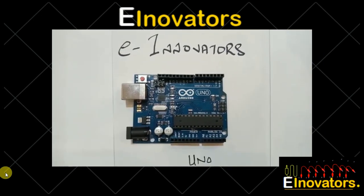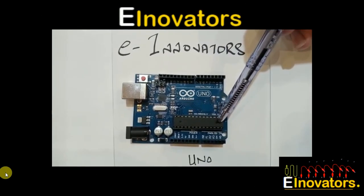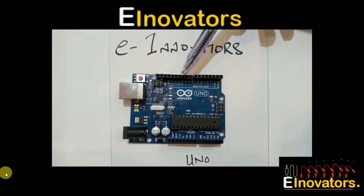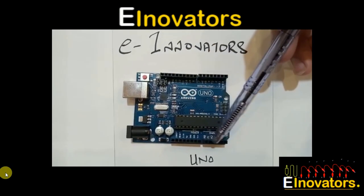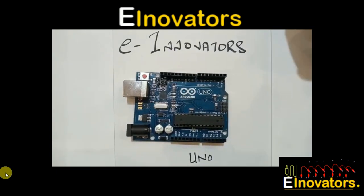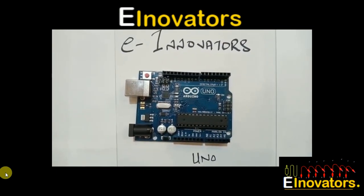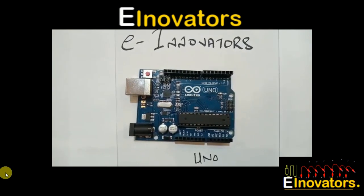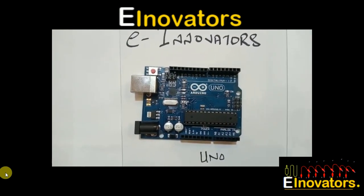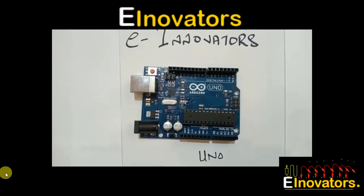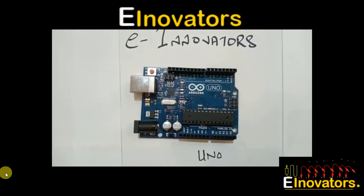This is the main IC, ATmega328P. There are 14 digital pins from 0 to 13 and 6 analog pins from A0 to A5. The difference between them is that analog input can take any number of values, unlike digital which can only take 0s or 1s. By changing the model of the Arduino board, the number of analog and digital pins varies. For example, the Mega board has more digital and analog pins compared to the UNO.